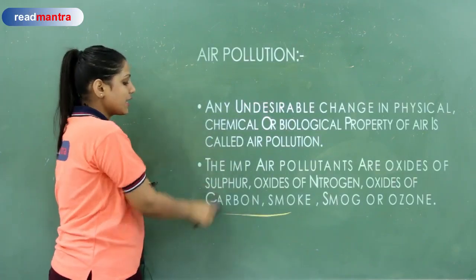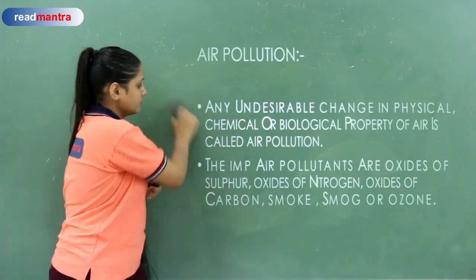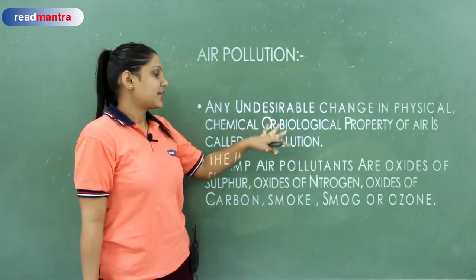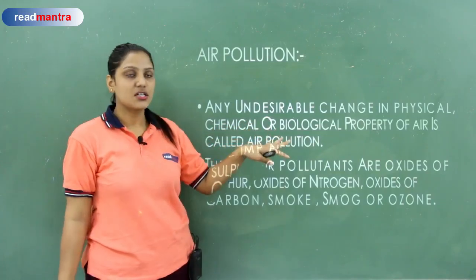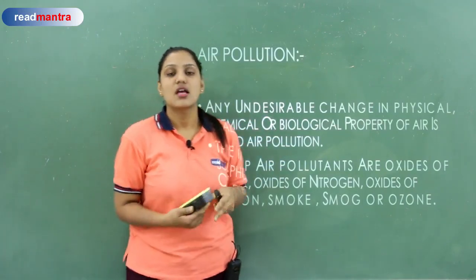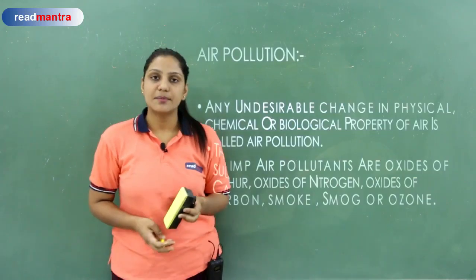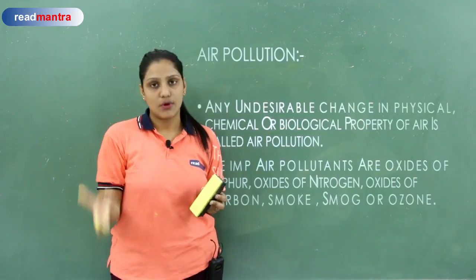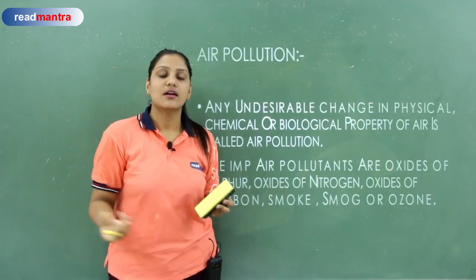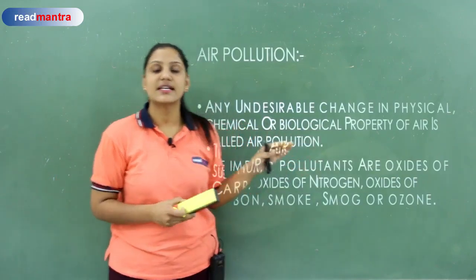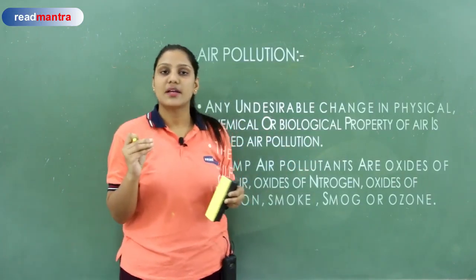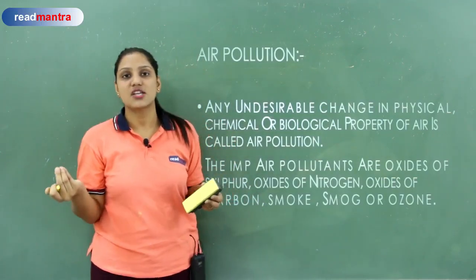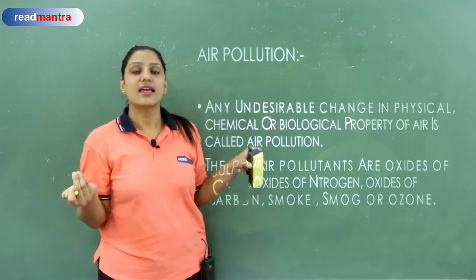First, about air pollution — any undesirable change in physical, chemical, or biological property of air is called air pollution. I told you about environmental pollution — the major components of the environment are air, water, and land. So first we are seeing air pollution. If any physical change, chemical change, or biological change comes in the quality of air, that is called air pollution.